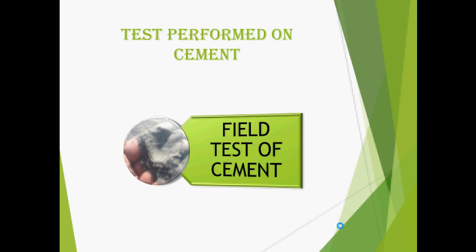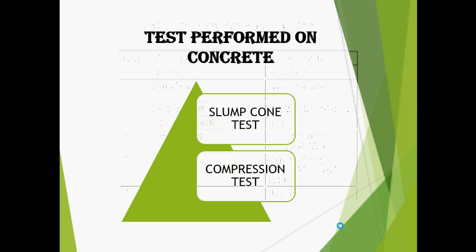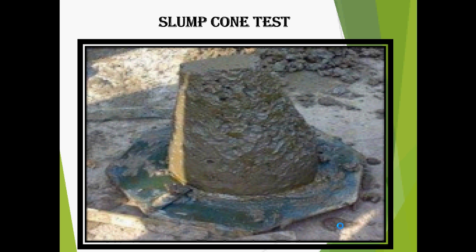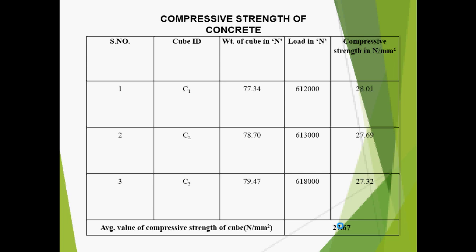These are the field tests for cement, and you can see the table referring to the field test results. Tests performed on concrete include the slump cone test for fresh concrete and the compression test for hardened concrete. You can see a true slump here and the cube held for curing. The average compressive strength of the cube obtained was 77.67 N/mm².